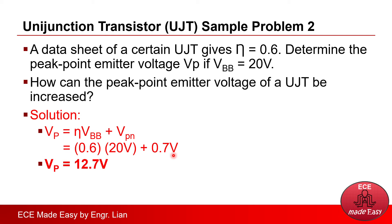And for the follow-up question, how can the peak point emitter voltage of a UJT be increased? Going back to the formula,